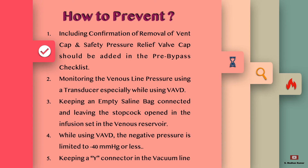Keep an empty cell-saver bag connected and leave the stopcock opened in the infusion set in the reservoir. When the venous reservoir is pressurized, it will bloat the empty bag, so that might be a visual confirmation for us. If we are not connecting a transducer while using VAVD, the negative pressure should be limited to minus 40 mmHg or lesser.